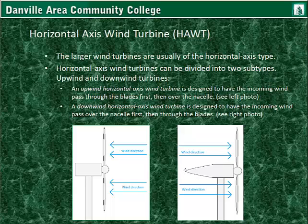Since the wind must pass over the backside of the nacelle in the downwind design, it's usually made a little more aerodynamic, similar to what the nose cone would look like, which covers the hub on the upwind design. The upwind design puts a little more stress on the entire assembly in the nacelle, while the downwind design actually puts less stress on the rotor.